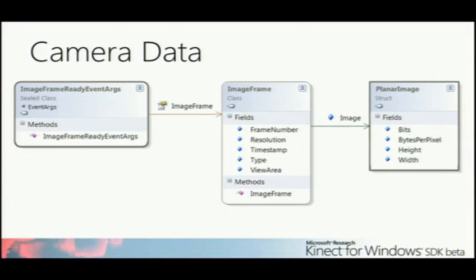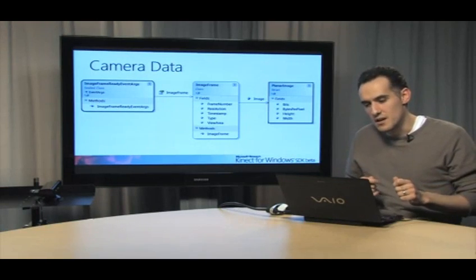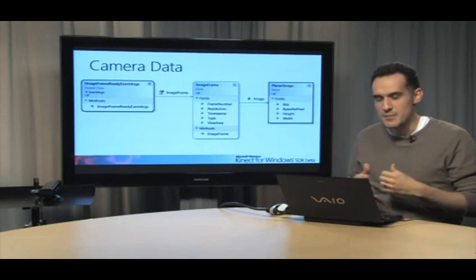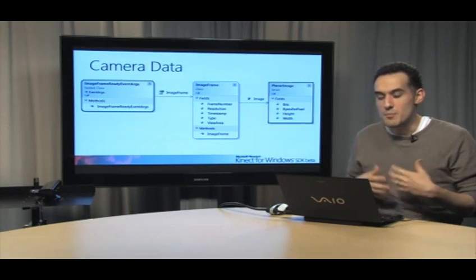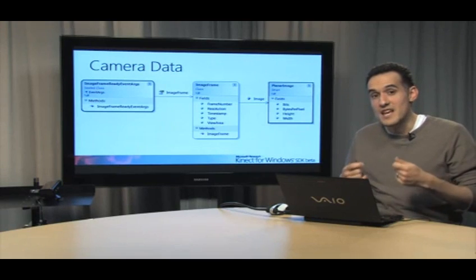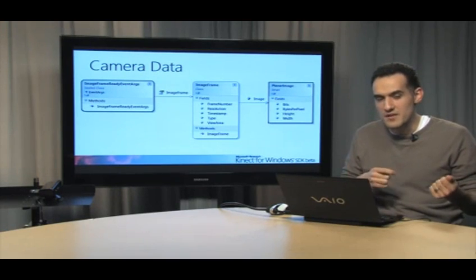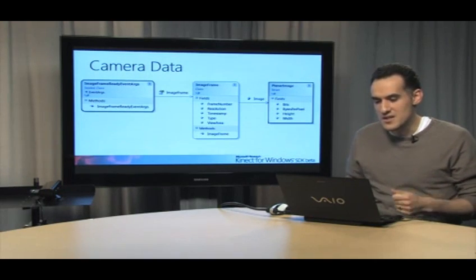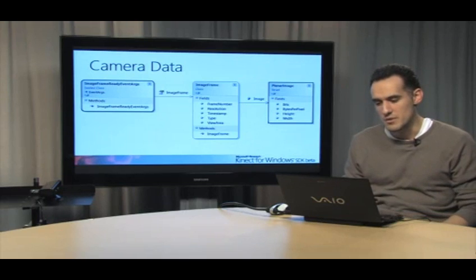So just to recap, the data when we have that event, it's an image frame that's coming back, includes the frame number and a number of different properties, and then the planar image has the actual data. So the difference here is the video frame has the actual contents of the video, say like a snapshot of an image, inside the bits byte array. The depth data actually has more than that. It doesn't have the actual data of the image, it has distance data. And we're going to walk through that in this session and show you how you can use that distance data to create your own images.